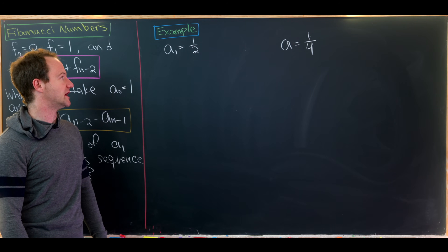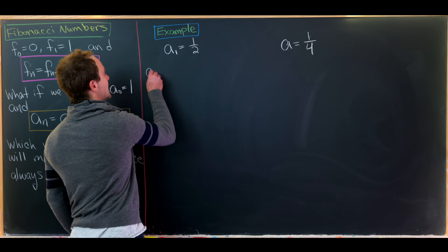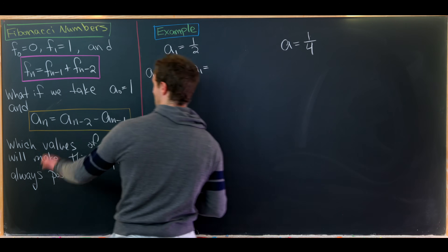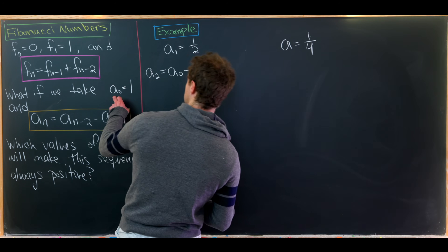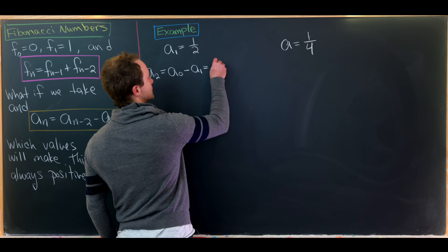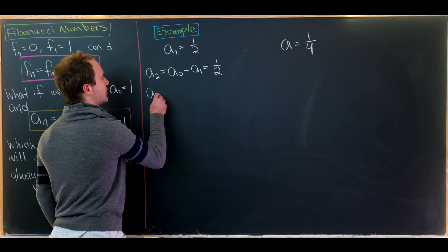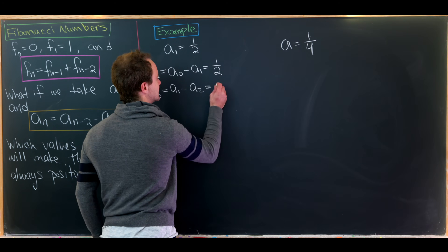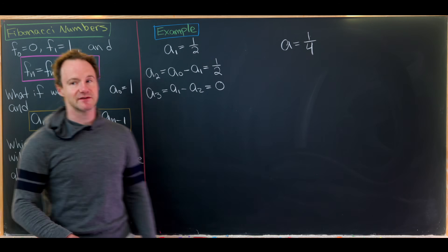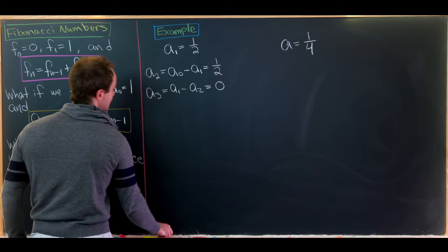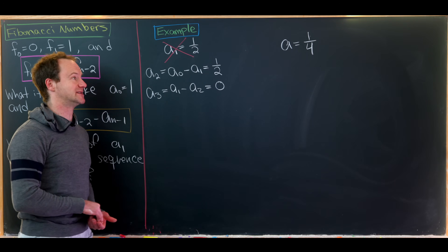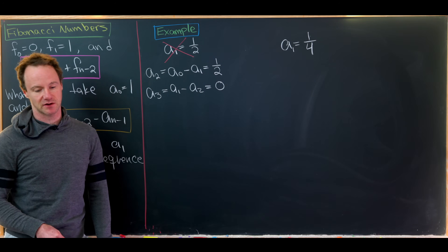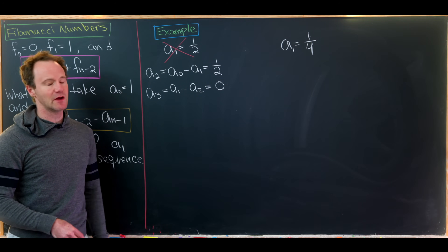Let's start with a_1 = 1/2. We get a_2 = a_0 - a_1 = 1 - 1/2 = 1/2. Then a_3 = a_1 - a_2 = 1/2 - 1/2 = 0. Immediately we have something that is not positive, which means this choice for a_1 does not work — it does not produce a sequence with only positive terms.